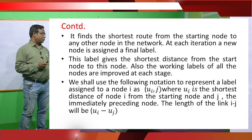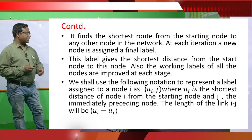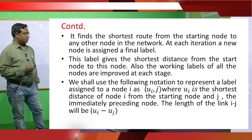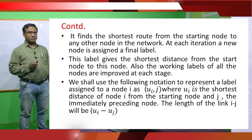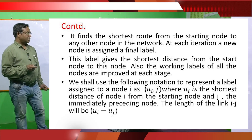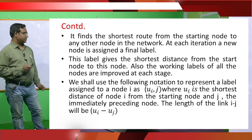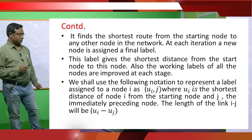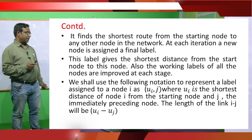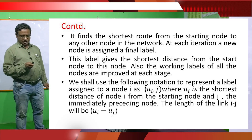Now, we shall use the following notation to represent a label assigned to a node: (Ui, j), where Ui is the shortest distance of node i from the starting node, and j is the immediately preceding node. The length of the link ij will be Ui minus Uj.